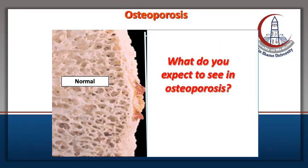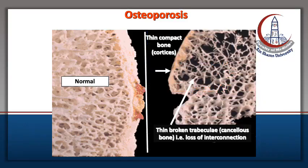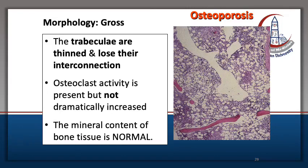In osteoporosis there is osteopenia with decreased bone matrix, thin cortex, and thin broken trabeculae of the cancellous bone. The trabeculae are thinned with loss of their interconnections. Osteoclast activity is present but not dramatically increased. The mineral content is normal — this is the very important differentiation from osteomalacia.